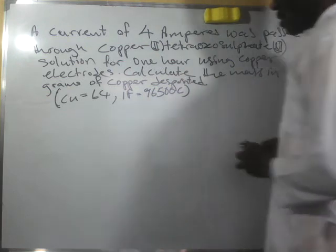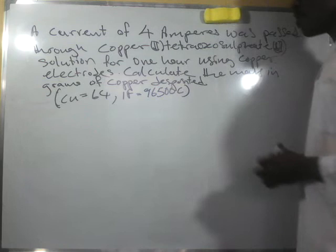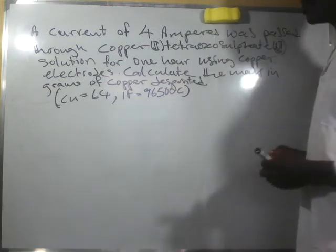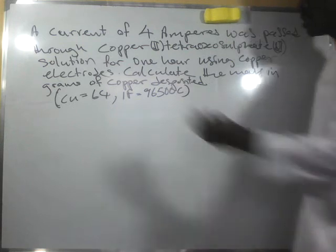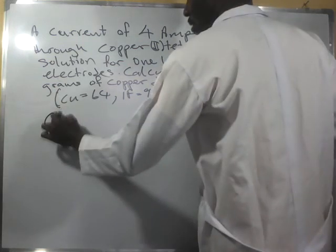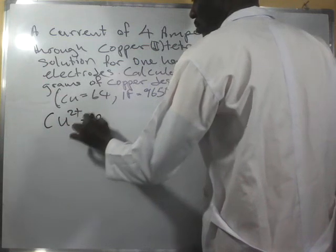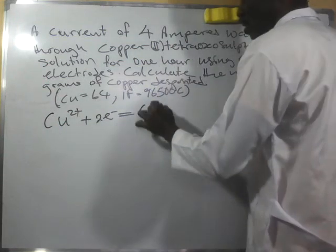The Faraday constant, which equals 96500 coulombs, is also given. In this case, we know that copper will require two electrons to be deposited as copper metal.